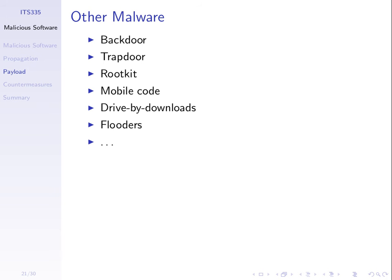There are many other types of malicious software. A backdoor is some feature or implementation in normal software that allows a malicious user to access that software through an unintended feature. A rootkit provides a set of services to a malicious user to run other malicious software on a system by usually overriding permissions, giving them root access to the system.